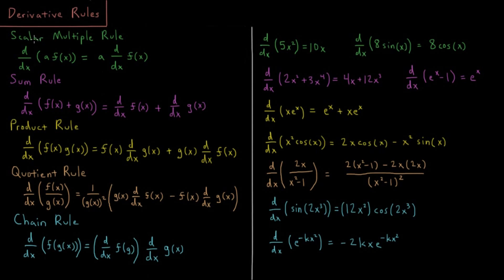First off we have the scalar multiple rule. This is whenever we have a function times a constant — what's the derivative of that function? The derivative of a constant times a function is that constant times the derivative of that function.